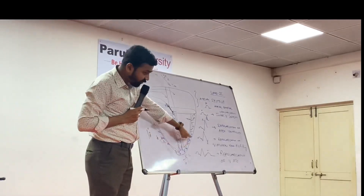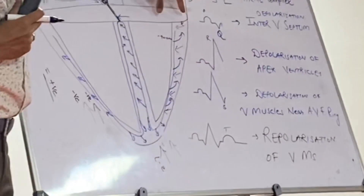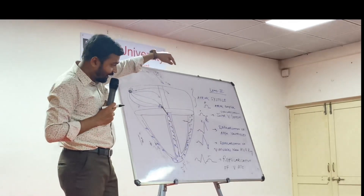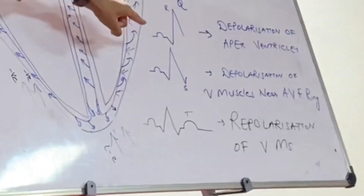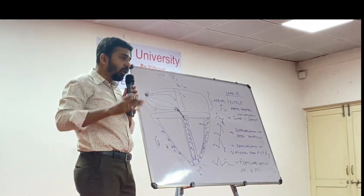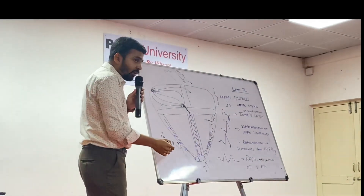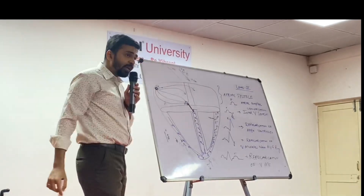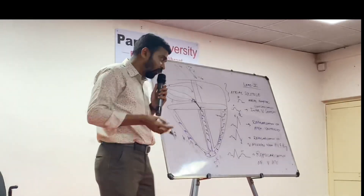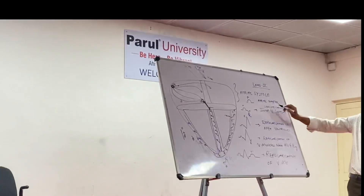Then it goes in the reverse direction near the atrioventricular fibrous ring, so it is in the opposite direction of lead 2, giving a small negative wave which is the S wave. Then repolarization occurs in the reverse direction from plus 20 to minus 90, which is in the reverse direction of lead 2. Since two negatives make a positive, we get the T wave, which is positive.